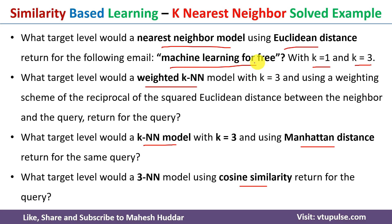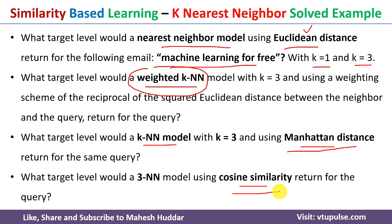In this video I discussed how to classify a new example using the nearest neighbor model with Euclidean distance and the weighted KNN algorithm. In the next video I will cover the remaining two methods: Manhattan distance and cosine similarity — the link will be in the description. If you found this helpful, please like, share, and subscribe for more videos.